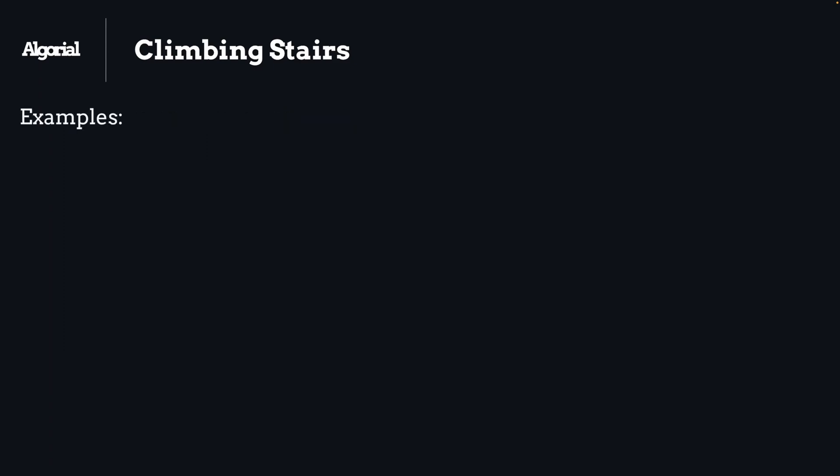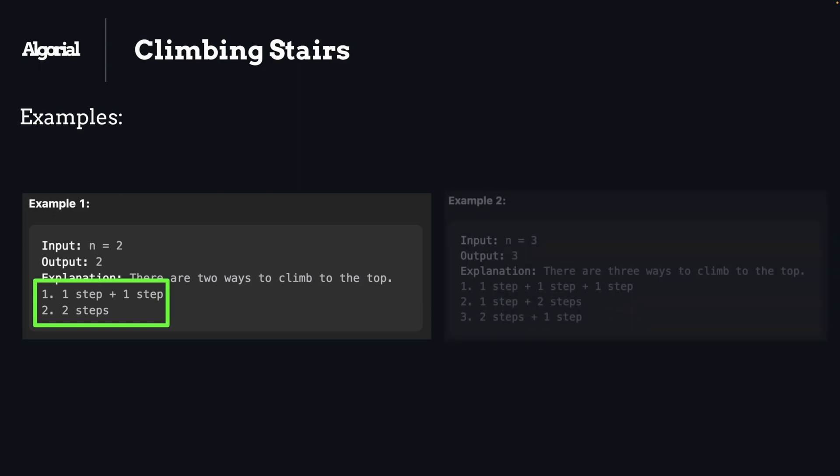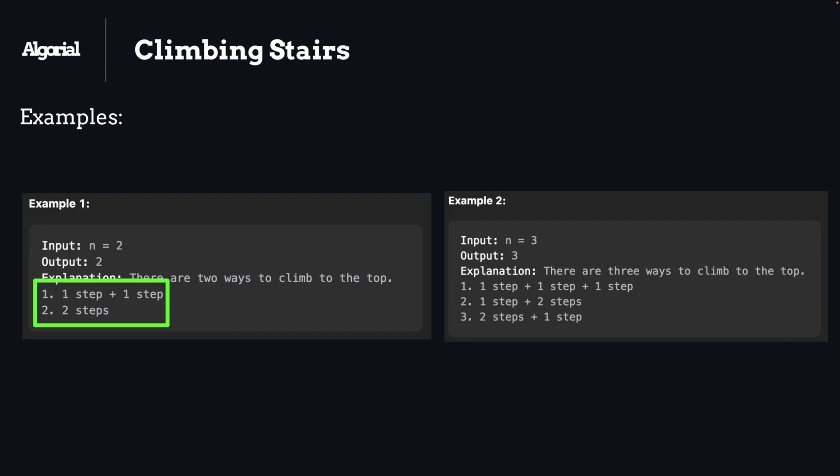Here is the first example. We have N of 2 and we're only allowed to take one step or two steps at a time, which leaves us with two possible solutions. Second example: we have N as 3. We're only allowed to take one or two steps at a time again, which leaves us with three possible solutions. So let's see how we're going to solve this problem.